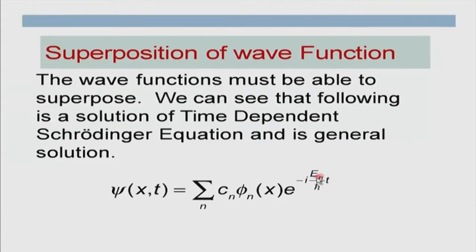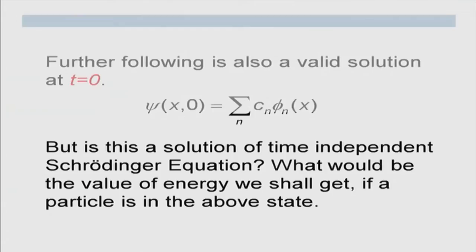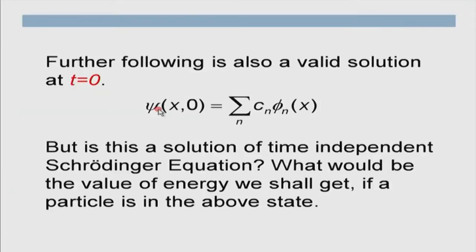If we put time t = 0 in the general equation, the exponential term becomes 1, so the wave function ψ(x,0) = Σ cₙφₙ(x). This is also a valid state at t = 0. A particle at time t = 0 could be in a state like c₁φ₁ + c₂φ₂, or a mixture of three or five terms. This is a valid solution.